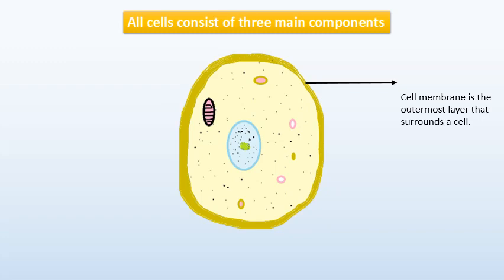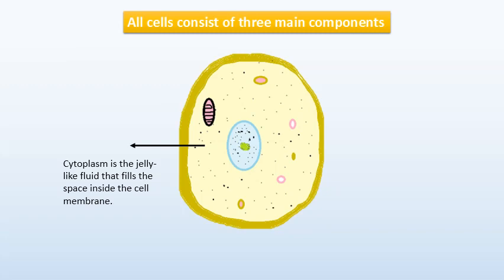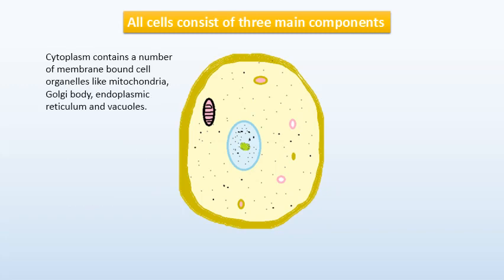Cell membrane is the outermost layer that surrounds a cell. Cytoplasm is the jelly-like fluid that fills the space inside the cell membrane.